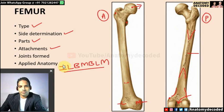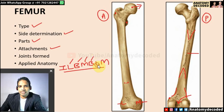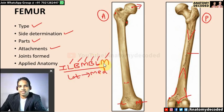The mnemonic for linea aspera attachments, from lateral to medial: I = vastus intermedius, L = vastus lateralis, B = biceps femoris, M = adductor magnus, B = adductor brevis, L = adductor longus, M = vastus medialis.